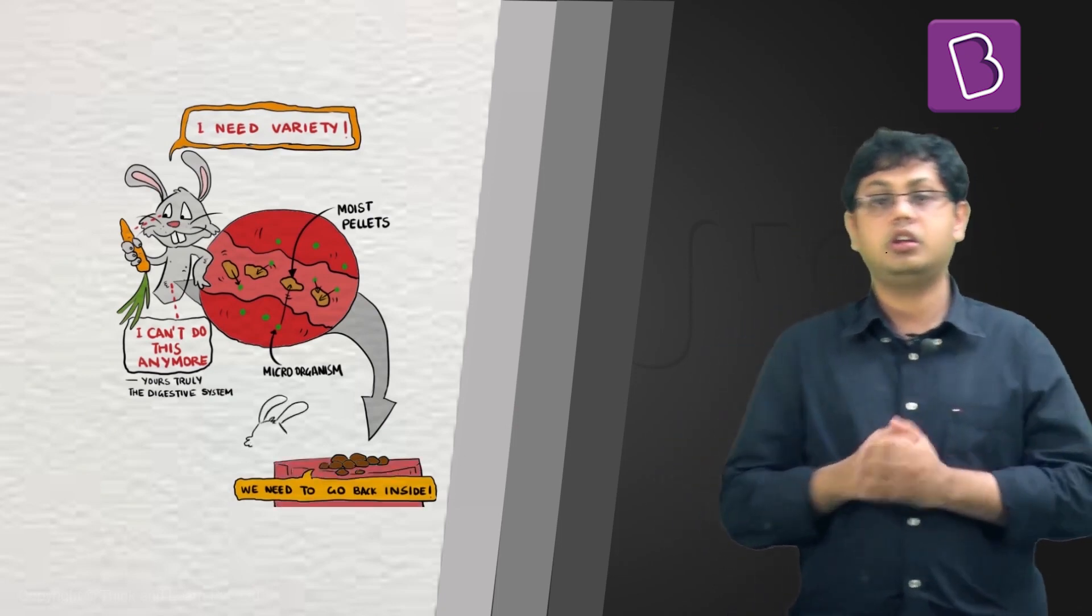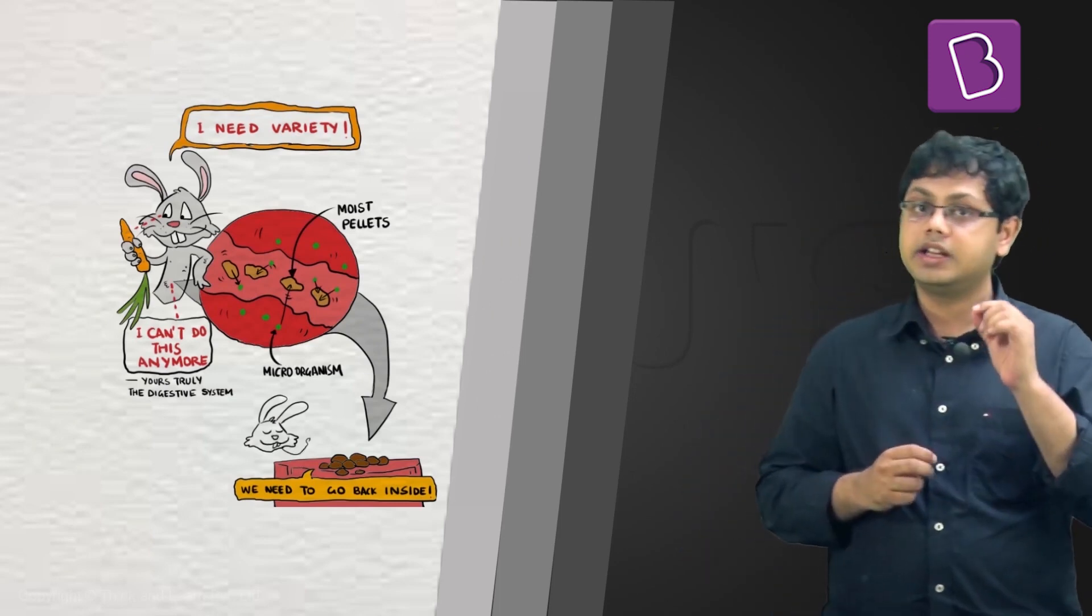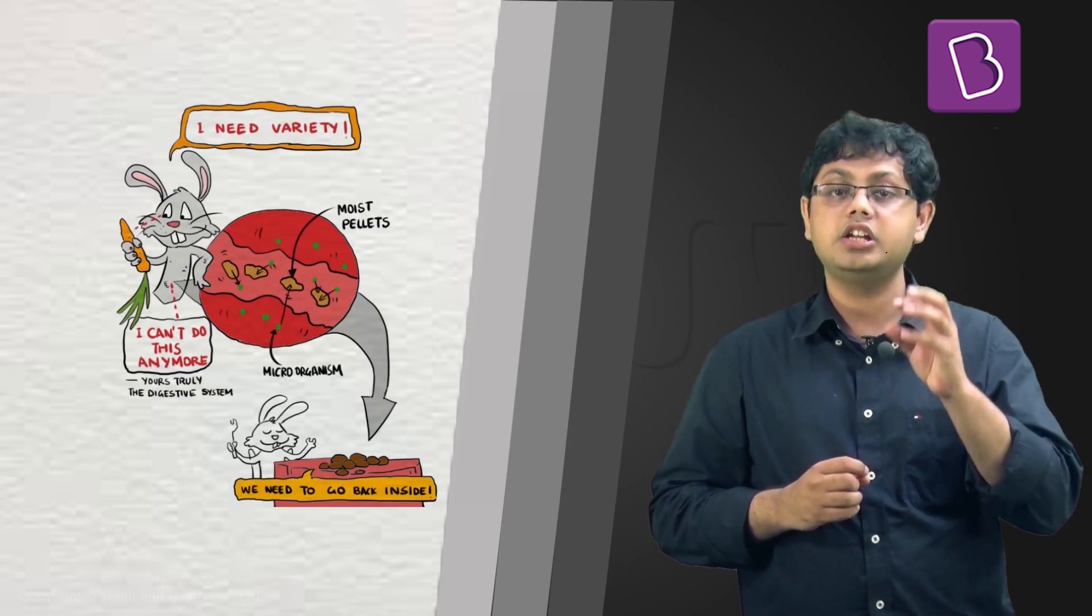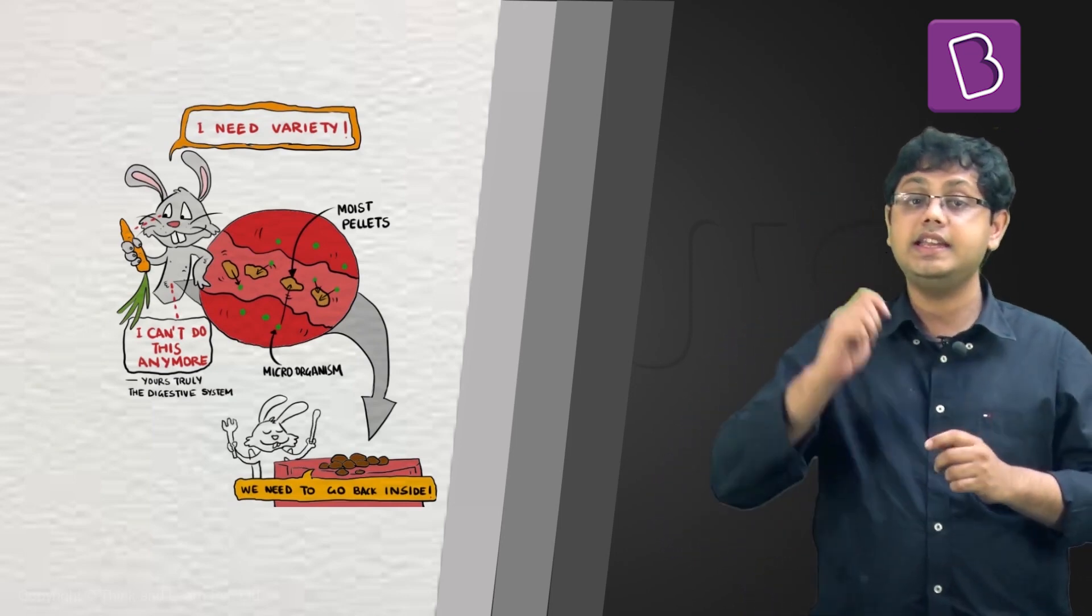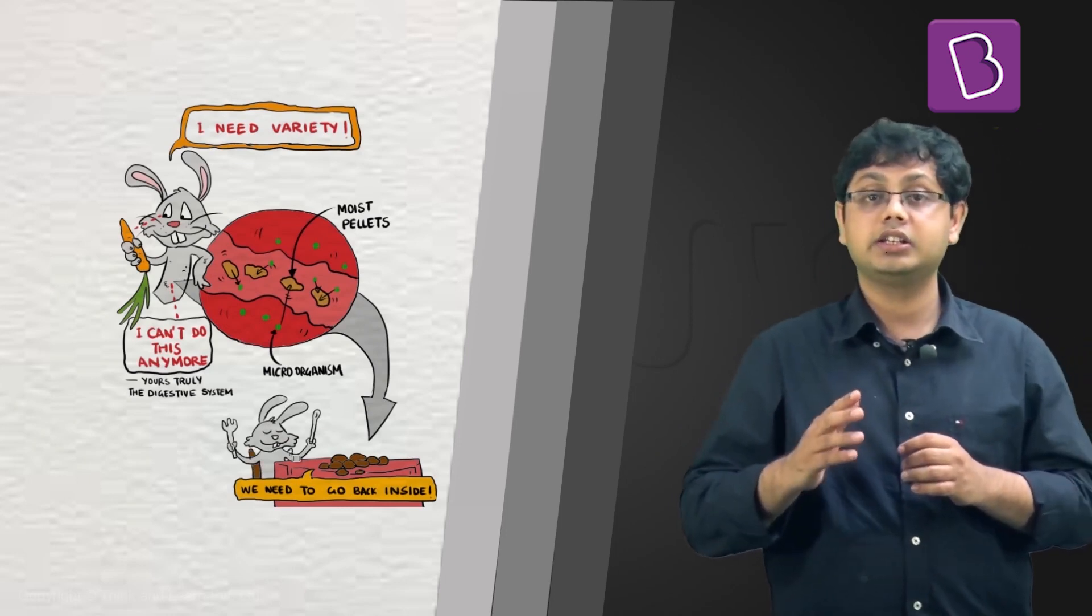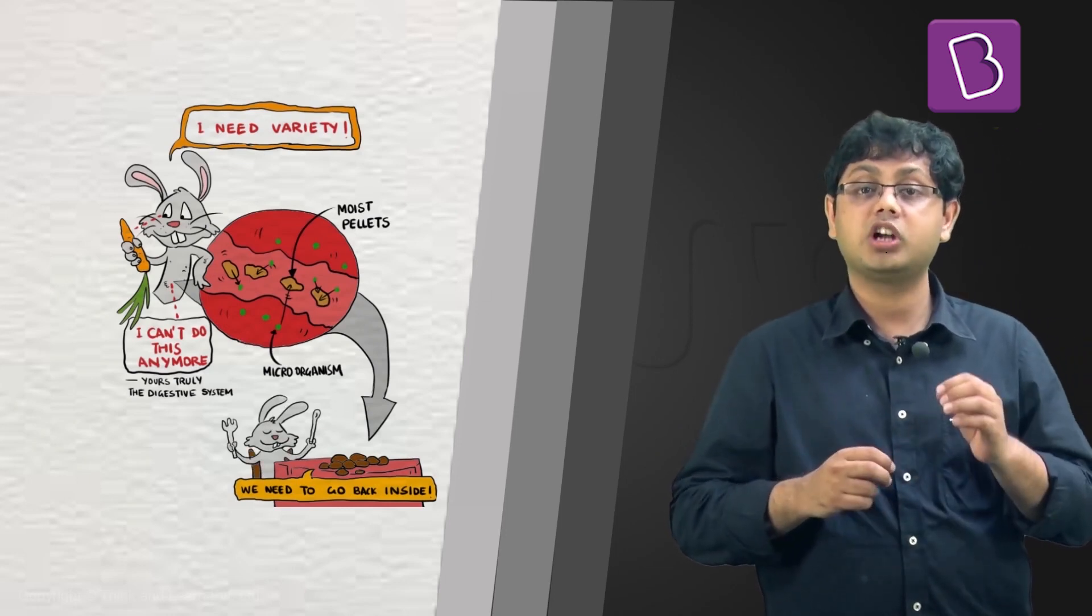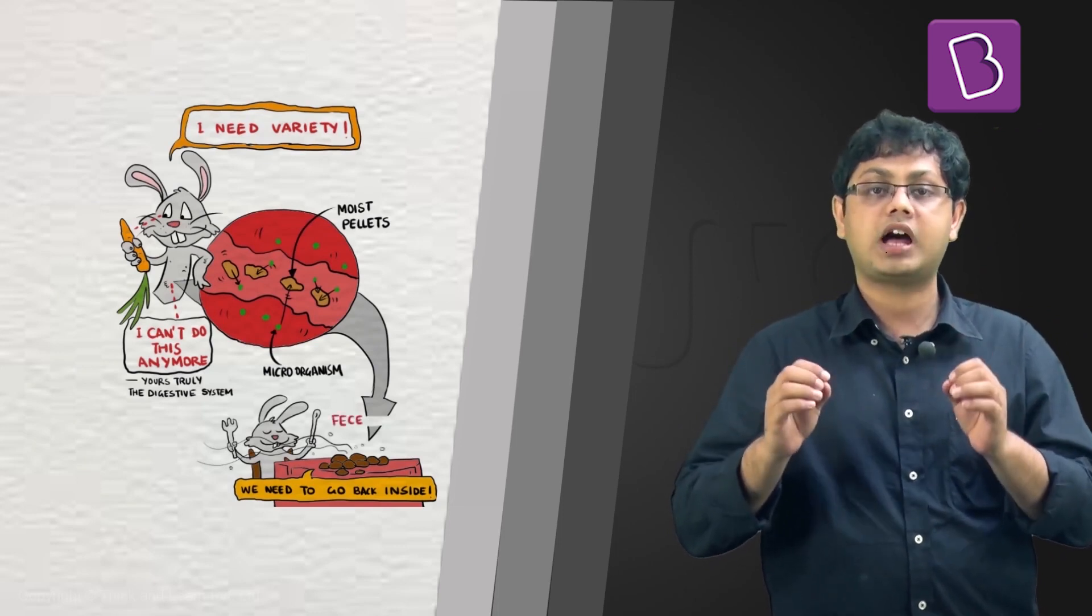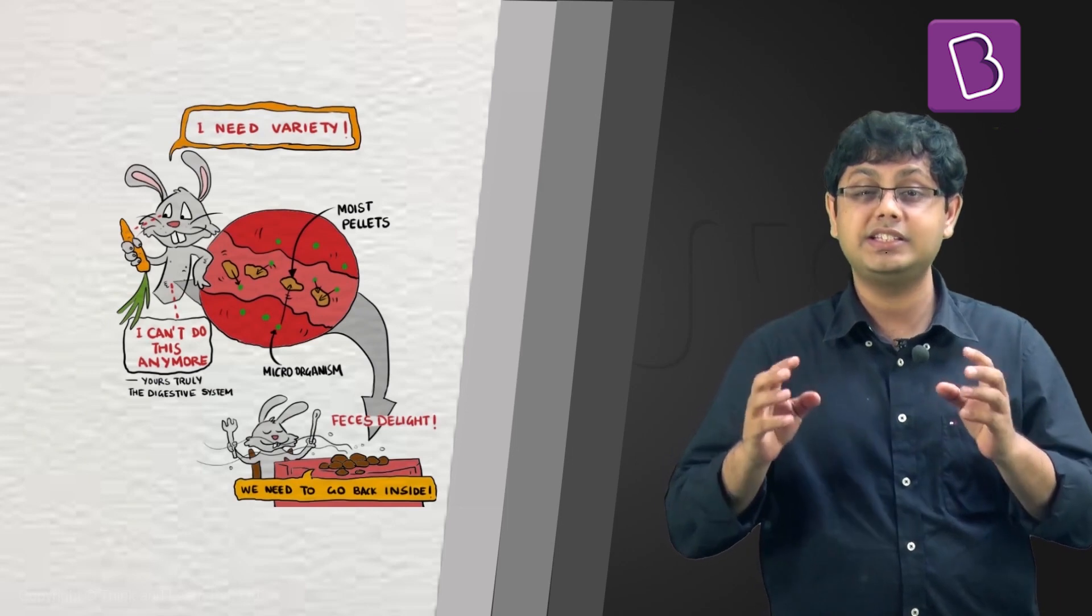Now how do you think this happens? The rabbit gets a signal from his brain about these little delicacies which are ready to be passed out of the body. He eats them the minute they emerge. Rabbits will often look like they're grooming their hind end, but what they're actually doing is eating these nutrient-rich pellets, which are actually their feces.